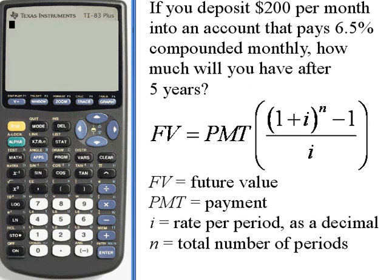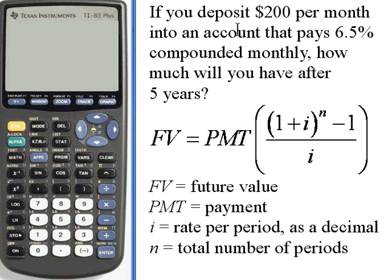Here's the problem we're going to work with. If you deposit $200 per month into an account that pays 6.5% compounded monthly, how much will you have after 5 years?